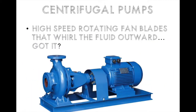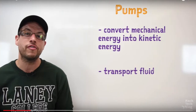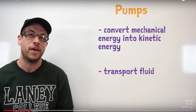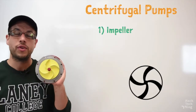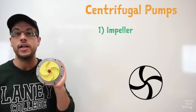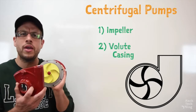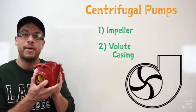A centrifugal pump is essentially a high-speed rotating fan blade that whirls fluid outward. In order to be classified as a centrifugal pump, a pump needs two unique components. The first is a rotating disc with curved blade-like vanes on it, called an impeller. The second is a specially shaped pipe called a volute casing, which contains the impeller and the pump fluid.